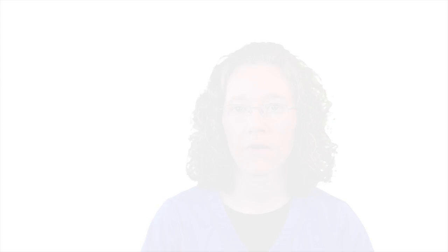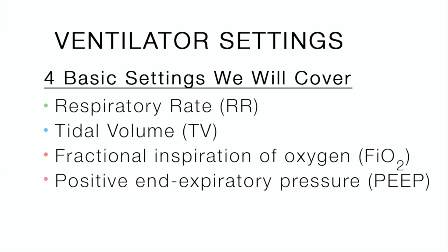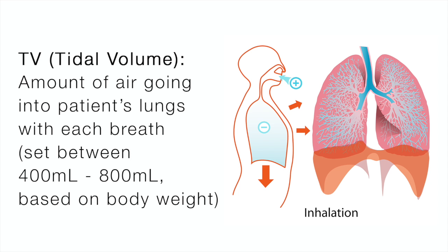We will be covering four basic ventilator settings: respiratory rate, tidal volume, fractional inspiration of oxygen, and peak end-expiratory pressure. Tidal volume, or TV, is the amount of air going into a patient's lungs with each breath, usually set between 400 to 800 milliliters based on body weight.